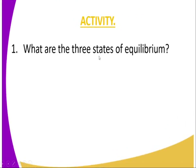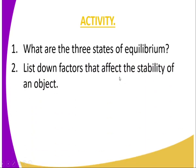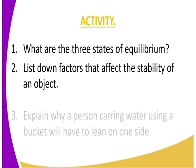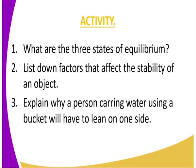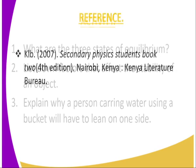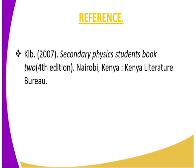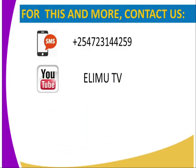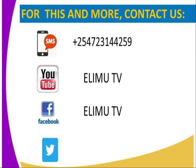To see whether we have got the concept, we can answer the following questions: State the three states of stability. List down the factors that affect the stability of an object. Also explain why a person carrying water using a bucket will have to lean to one side. You can refer to this in Physics Students Book 2, and you can also contact us through SMS, our Facebook page, Elimu TV on YouTube, or give us a tweet at ElimuTV underscore KE.